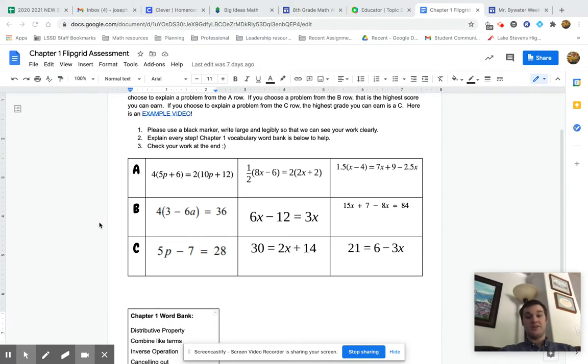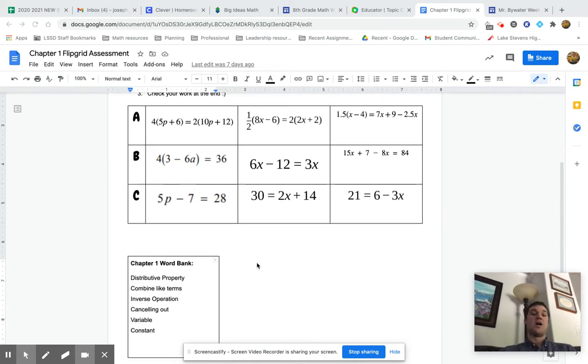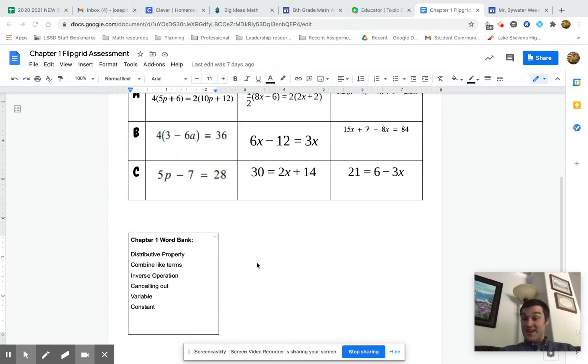And then last but not least, there is a C row. If you choose one problem from C, correctly explain yourself, then you earn a C. Now to get that grade that you choose, you do have to do two things. You have to show your work.